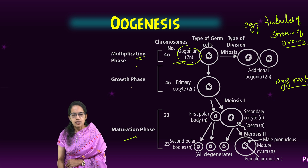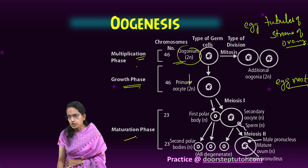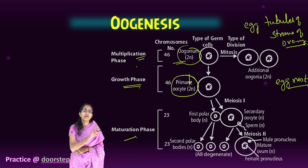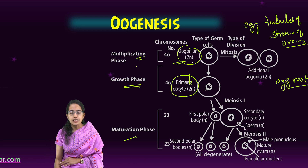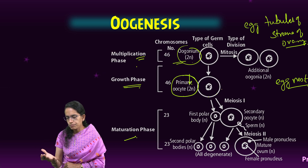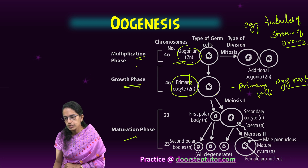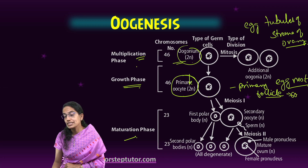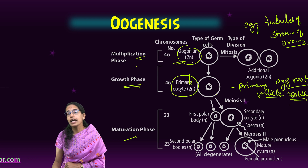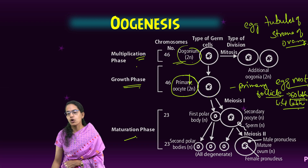The next is the growth phase, where one of the oogonia actually grows in size and forms the primary oocyte, similar to the primary spermatocyte in spermatogenesis. The primary oocyte formed is surrounded by granulosa cells, forming primary follicles. In the fetal ovary, there are around 60 lakh primary follicles, which reduce to around 4 lakhs in a young adult woman.